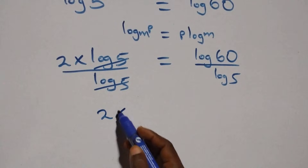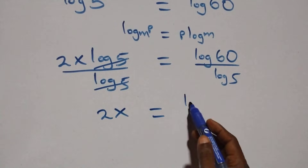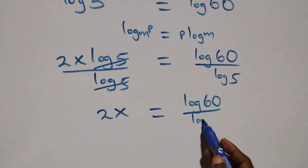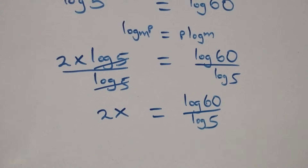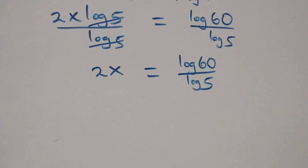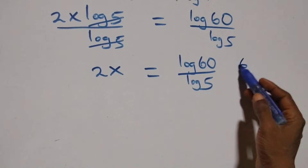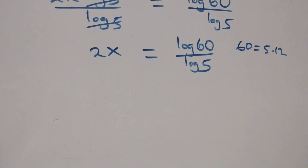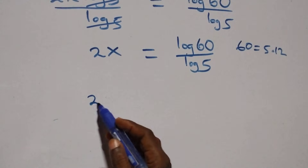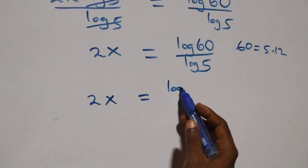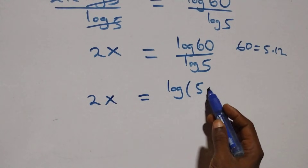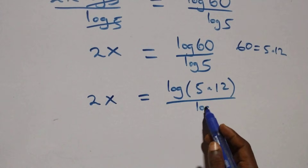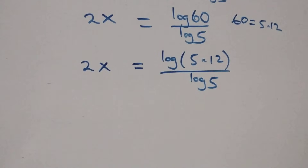We now have 2x equals log 60 over log 5. We can write 60 as 5 times 12, so this becomes 2x equals log of 5 times 12, over log 5.